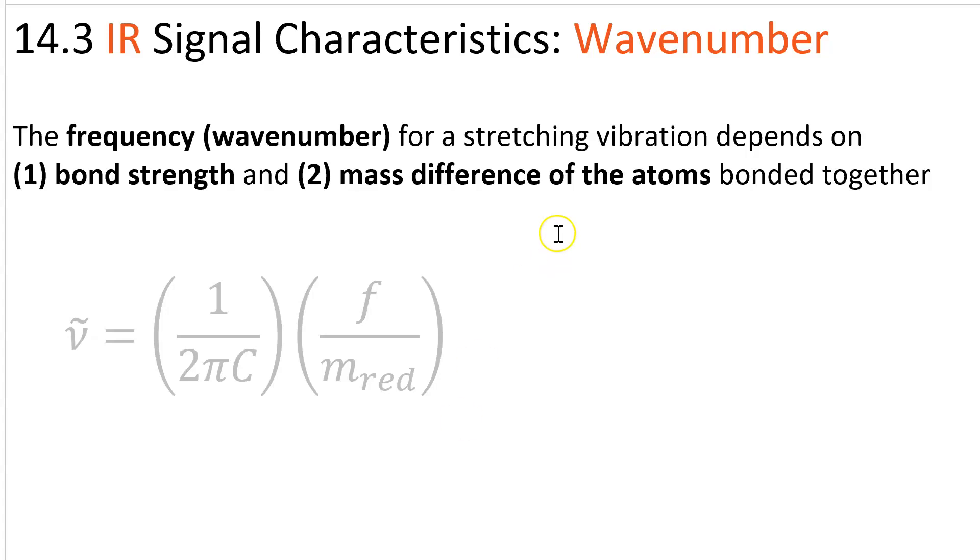Wavenumber depends on the strength of the bond and the mass difference of the atoms that are bonded together. You can think of the bond strength as being like a spring constant.